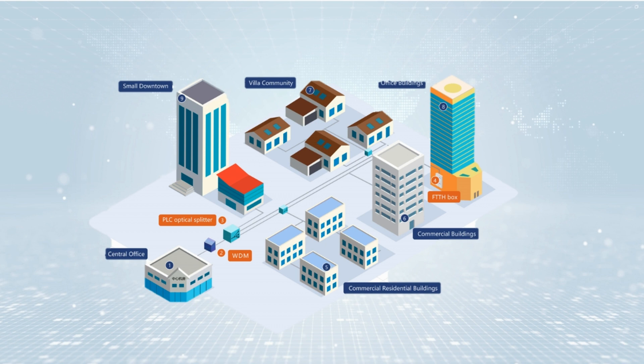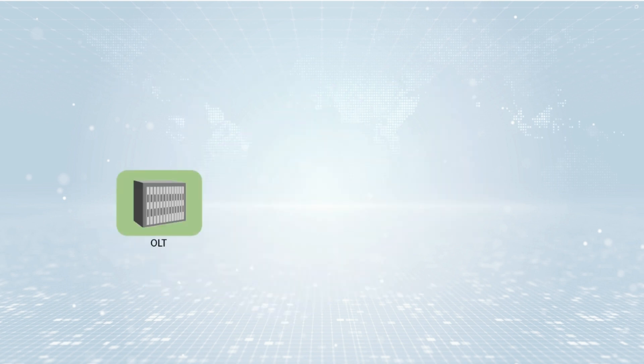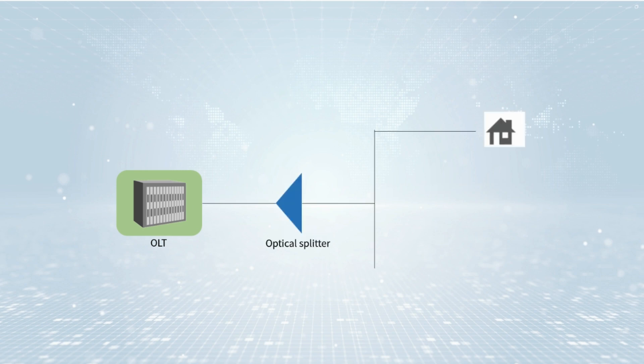An optical fiber splitter splits an optical fiber signal into two or more optical signal outputs by a determined ratio. It is an important device in access FTTH networks. For example, a 1 by 4 optical splitter distributes the optical signal in one optical fiber to four optical fibers in a certain proportion. The split ratio can be even or uneven.